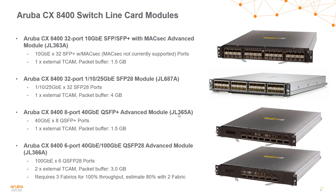Here is a closer view of the four line card modules. We have two 32-port modules: a 10 gig and a 25 gig module. The 10 gig module leverages a 1.5 gigabyte packet buffer while the 25 gig module leverages a 4 gigabyte packet buffer. The 40 gig and 100 gig modules leverage a 1.5 gigabyte and a 3 gigabyte packet buffer respectively. Note that the 6-port 100 gig module requires three fabric modules to be installed to achieve 100% throughput.